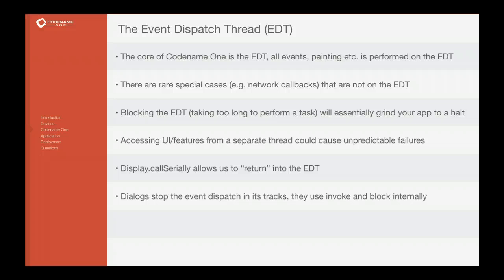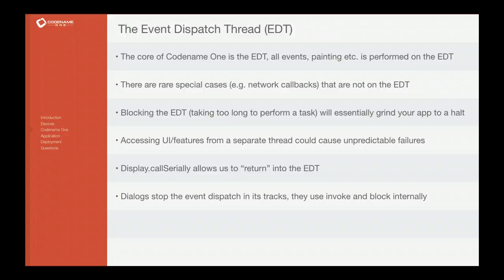Essentially every modern graphic toolkit is constructed around a thread that runs in a sort of infinite loop, and it performs all the operations for the graphic toolkit — it handles the events, sends and delivers all the events from that single thread, and it performs all the painting. Instinctively you might think, why not use the multiple cores I have by having multiple threads? We do have multiple threads, but only one of them is exposed to you as a user.